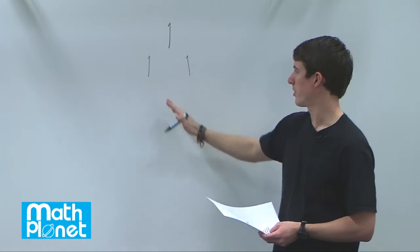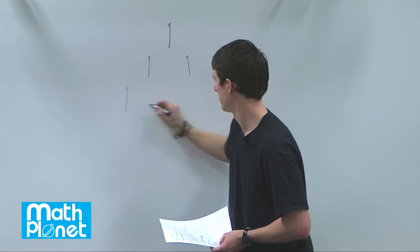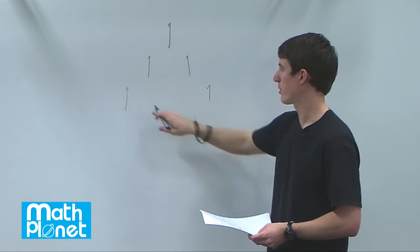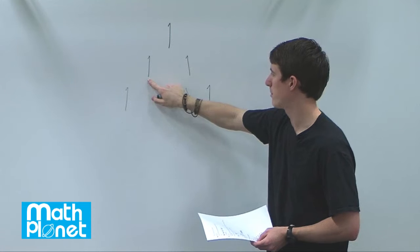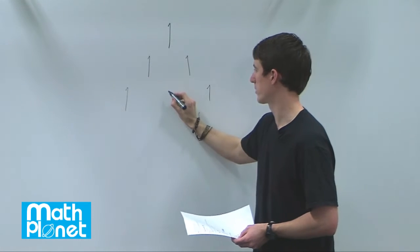And then we can say the outside again is one, but now we're going to have three terms. To determine what goes here, we have the sum of these two pieces. One plus one is two.